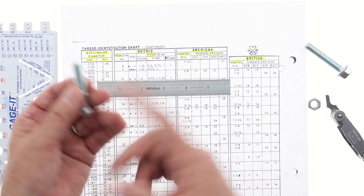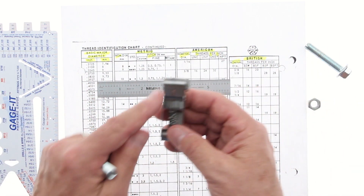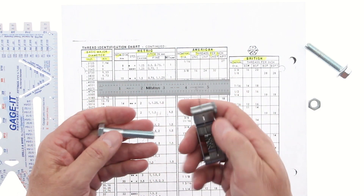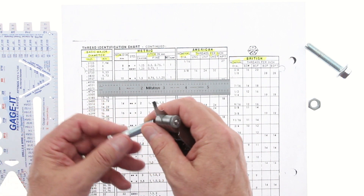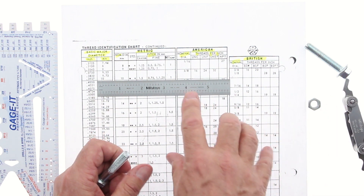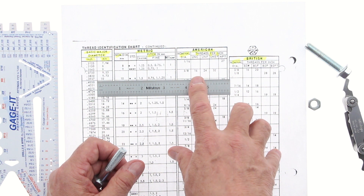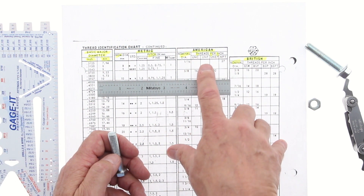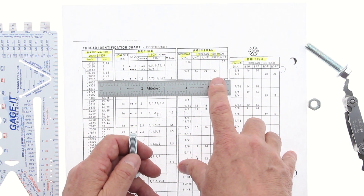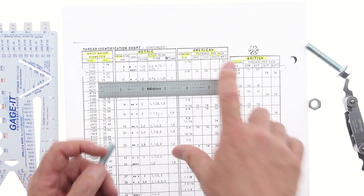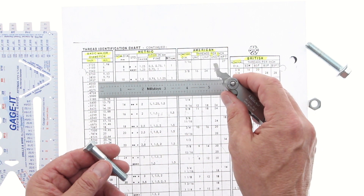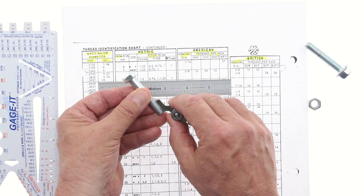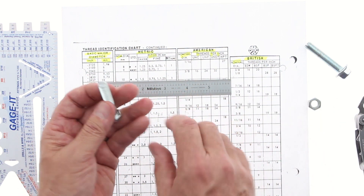We've got the first part: it's a three-eighths bolt. Now some people use a thread gauge — this one has 50 or 60 little gauges — to find how many threads per inch, trying them one by one. You don't have to do that. The chart already shows that beside the three-eighths bolt there are three options: 16 threads per inch (UNC — Unified National Coarse), 24 threads per inch (UNF — Unified National Fine), and 32 (UNEF — Extra Fine). I take the 16 TPI gauge and put it against the bolt — it fits perfectly, like a hand in a glove.